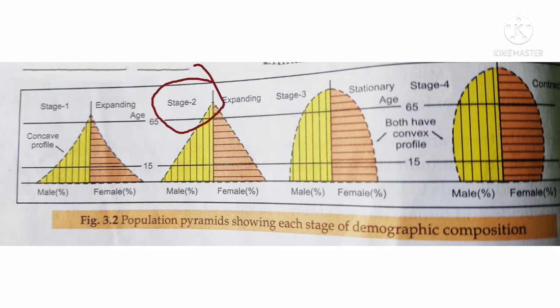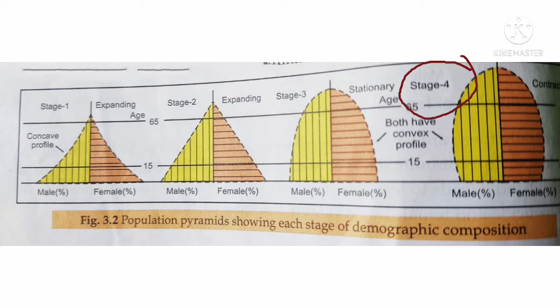In Stage 3, there is a falling birth rate and low death rate. In Stage 4, there is a low birth rate and low death rate, meaning high life expectancy. This also helps to understand a country's socio-economic condition.